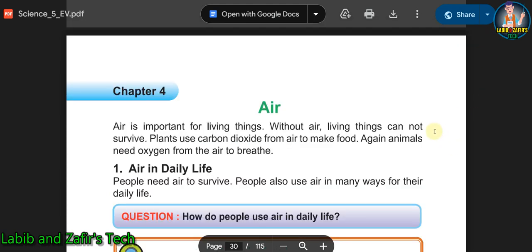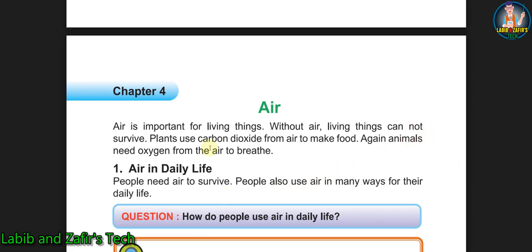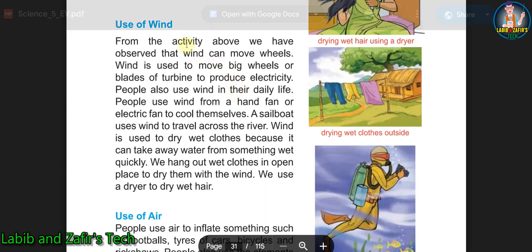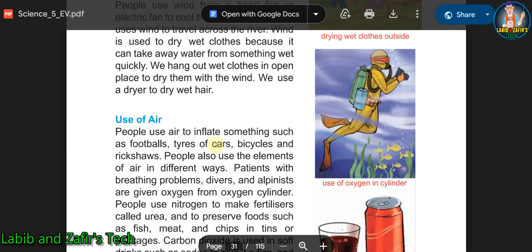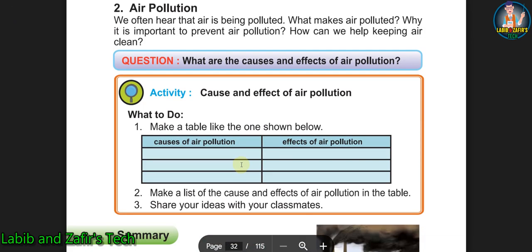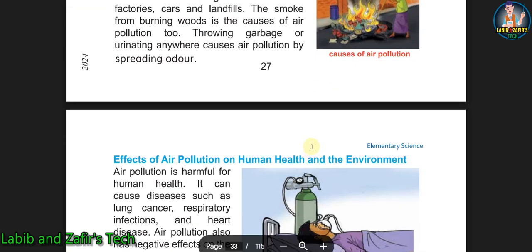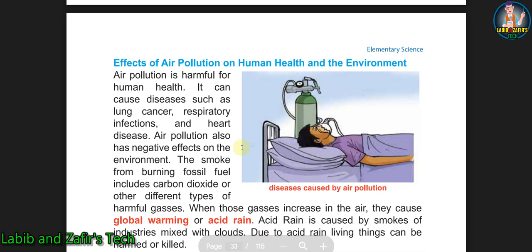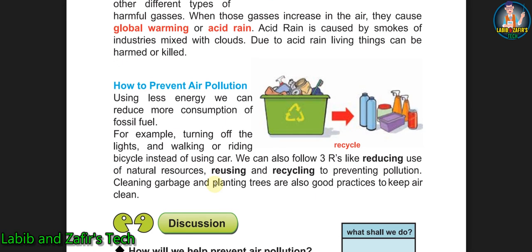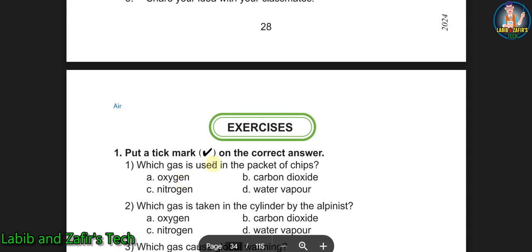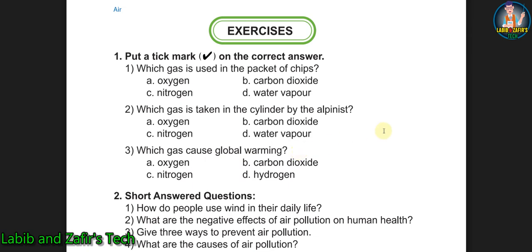In Chapter 4: Air, we will first learn what is air and the uses of air in our daily life, then the uses of wind and how we use air in everyday lifestyles. In the second lesson on air pollution, we'll learn what is air pollution, what are the causes of it, what are the bad effects on human health and environment, and how to prevent air pollution. Now let's go through the exercises.